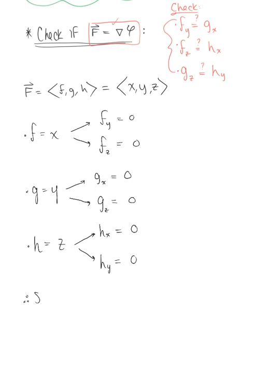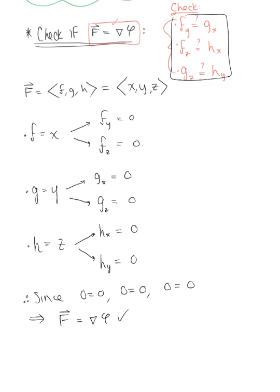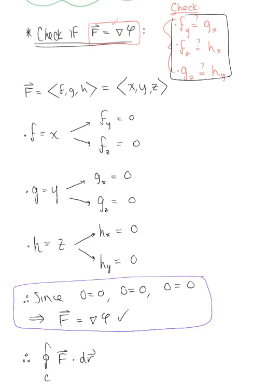Therefore, since zero equals zero, zero equals zero, and zero equals zero — keeping these three properties in mind — this tells us that our vector field F is conservative. Without any further computation, the integral over the closed curve C of the vector field dotted with dR equals zero, because C is closed and F is conservative. And that is our final answer.